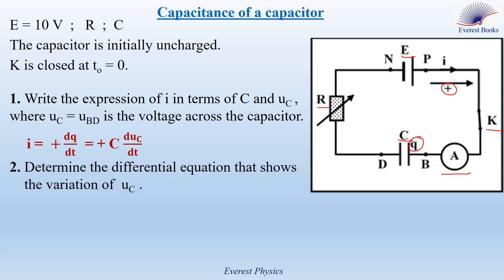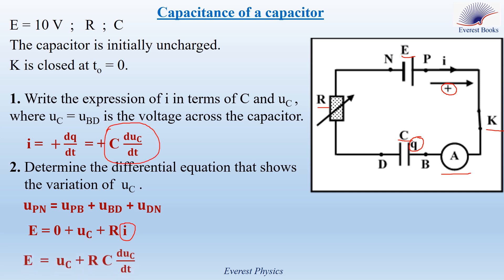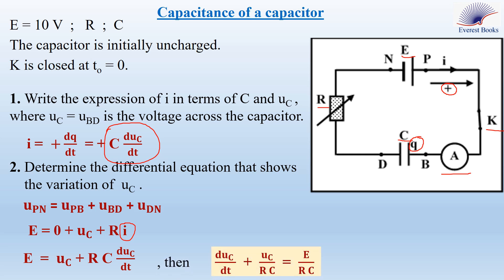Number two: determine the differential equation that governs the variation of UC. Applying Kirchhoff's voltage law, UPN equals UPB plus UBD plus UDN. Since UPB is the voltage across a closed switch plus the voltage across an ammeter of negligible resistance, UPB equals zero. UBD is taken as UC, and UDN equals RI, since the positive sense is oriented from D to N through the resistor. Replacing I by C dUC/dt, we get E equals UC plus RC dUC/dt. Dividing both sides by RC gives the first-order differential equation governing the variation of UC during charging.